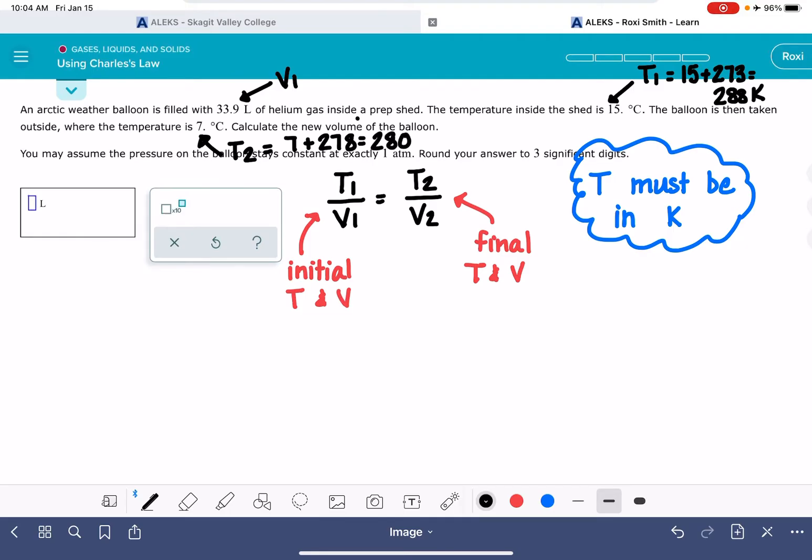And we're being asked to calculate the new volume of the balloon. That's V2. That's the variable that we don't know.